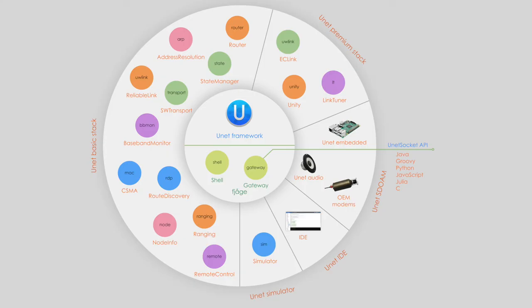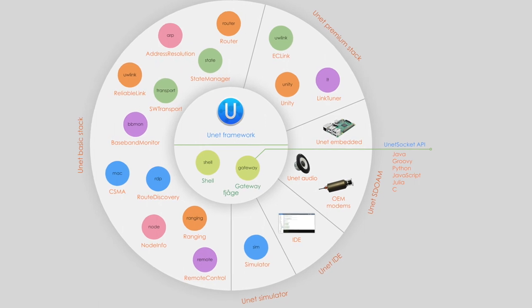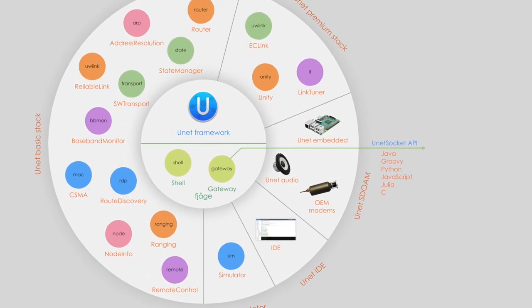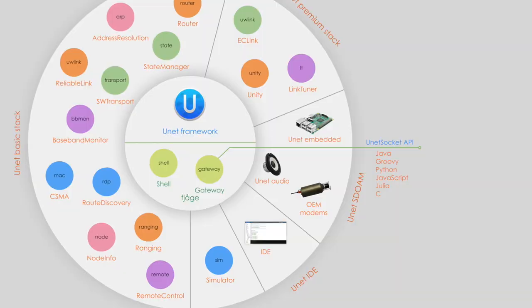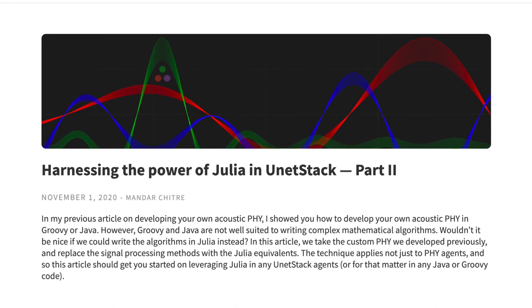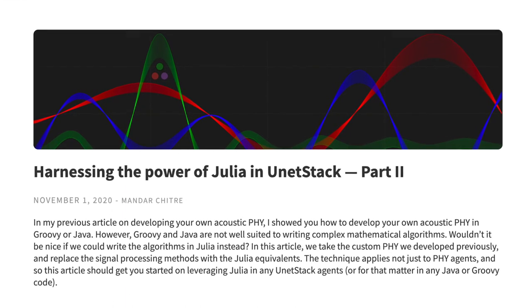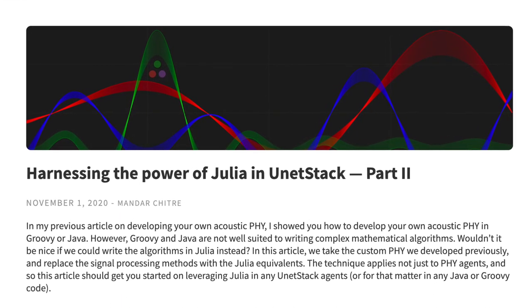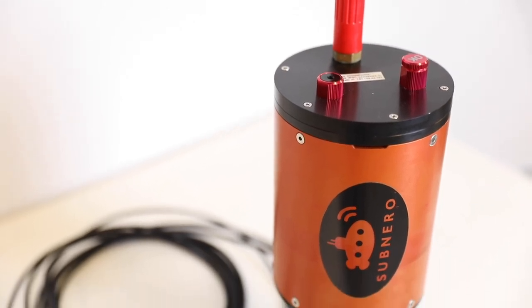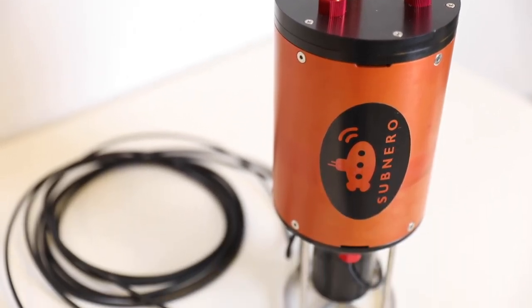Some of these features will be available as a software upgrade in the form of UnetStack premium assets. For power users, the full potential of the devices can be harnessed through the customizability of UnetStack. You can get direct access to the raw data from all channels in real-time through UnetStack APIs. With native support for scientific computing languages such as Julia, or UnetStack gateway support for Python, these devices reduce the time to deployment of your algorithms dramatically.